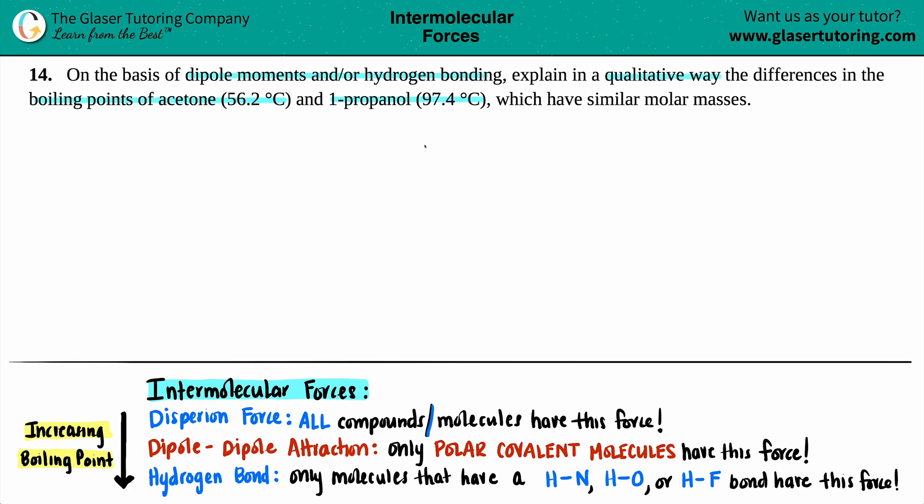Okay, so let's just write it out here. We have acetone, and we have 1-propanol. Now, they did tell us that the boiling point for acetone was 56.2 degrees Celsius, and the other one was way higher, 97.4 degrees Celsius.